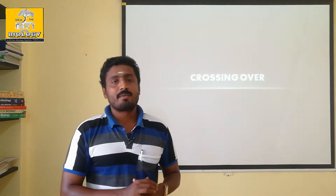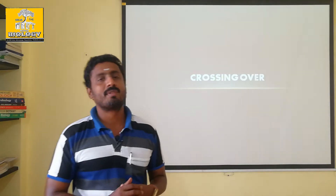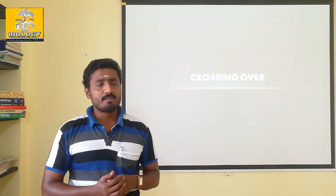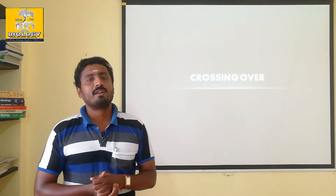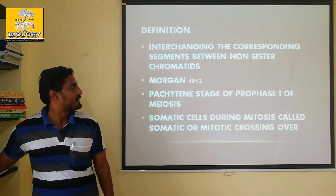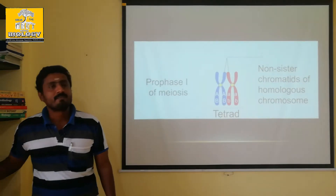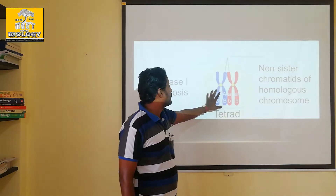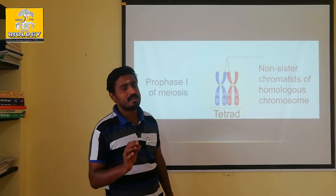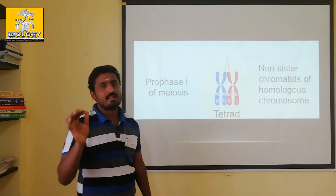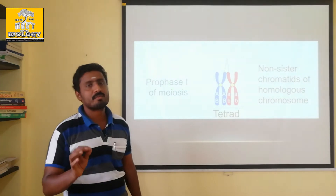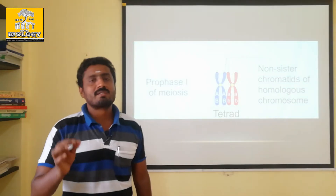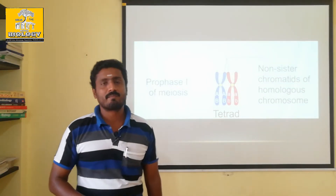In the Pachytene stage, we can see what happens. What is the chromosome? They are in bivalence. What is a bivalent chromosome? It is because of the chromosome — there are genes in this chromosome. So we can see a character that exists in a person.